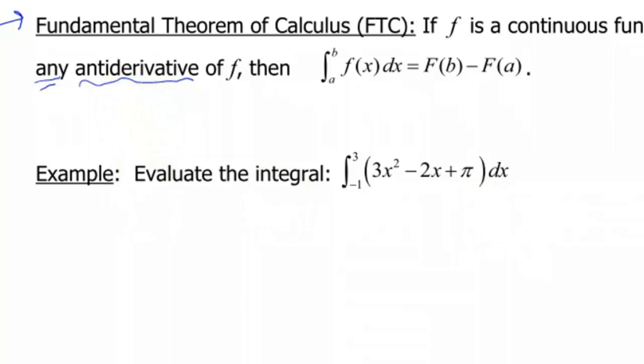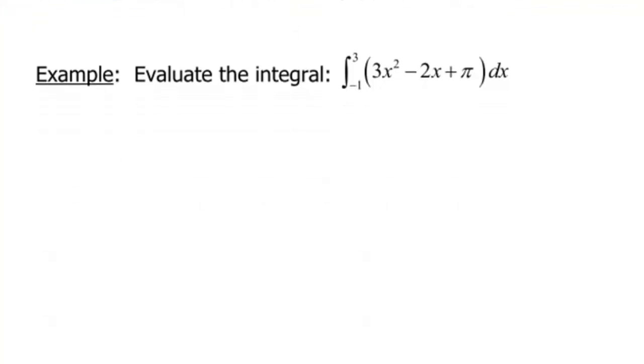My first example here today says evaluate the integral from negative 1 to 3 of 3x squared minus 2x plus pi, and all of this is going to be done dx. So remember, that just means we are integrating with respect to x. So x is going to be our variable.